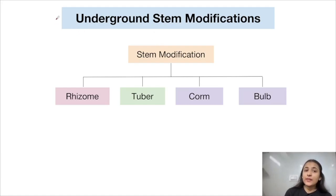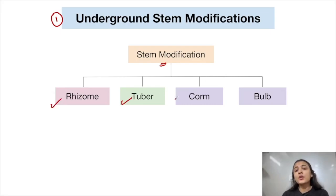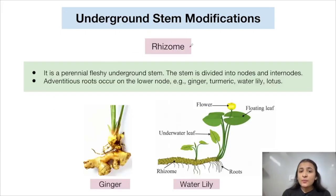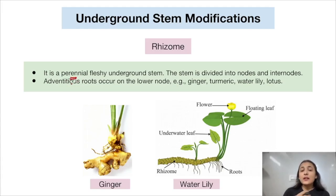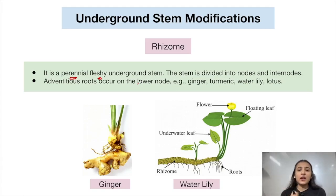Let us begin with underground stem modifications. Rhizome is a perennial fleshy underground stem. Perennial means it can live for more than two years. The stem is divided into nodes and internodes — nodes are where leaves arise and the space between two nodes is the internode. Fleshy here means the stem contains some substance inside giving it a soft feel when pressed.